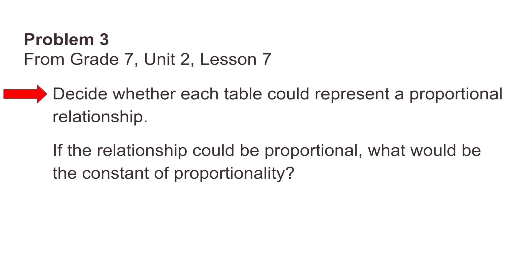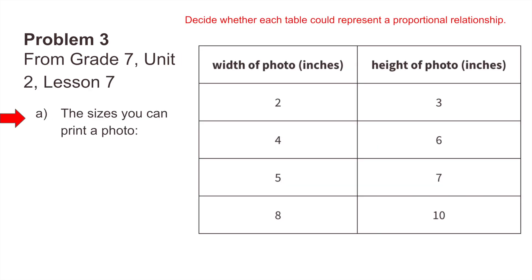Number 3: decide whether each table could represent a proportional relationship. If the relationship could be proportional, what would be the constant of proportionality? Part A: the sizes you can print a photo.